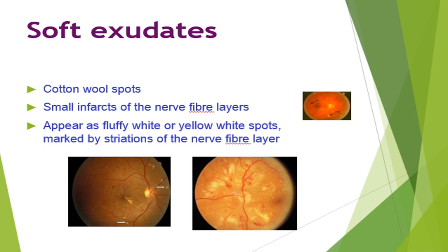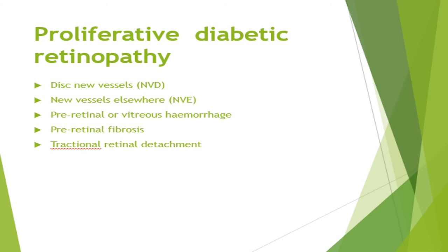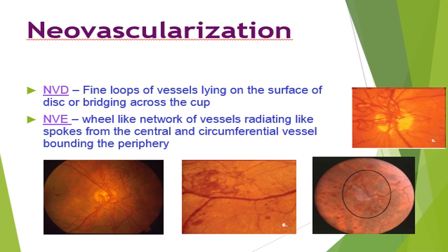What constitutes proliferative diabetic retinopathy is new vessels at the disc — that is the optic disc — or new vessels elsewhere (NVE), pre-retinal or vitreous hemorrhage. Pre-retinal hemorrhage is hemorrhage present between the vitreous and the retina, and any pre-retinal fibrosis or tractional retinal detachment constitutes proliferative diabetic retinopathy. This slide shows new vessels at the optic disc or elsewhere.